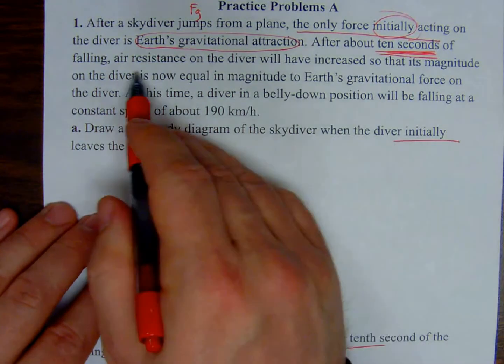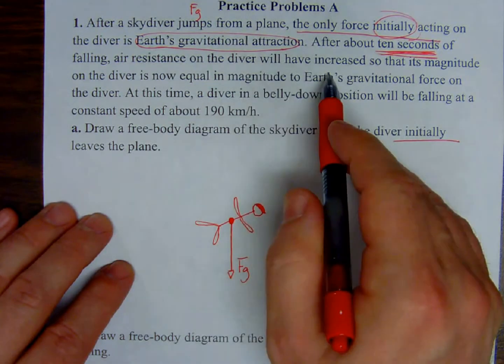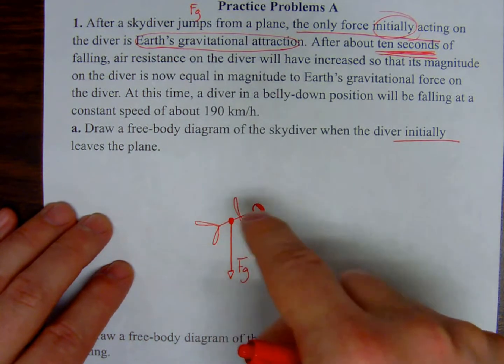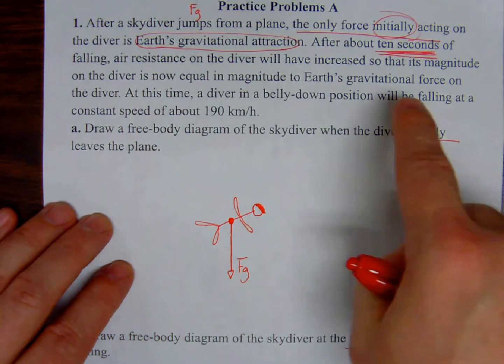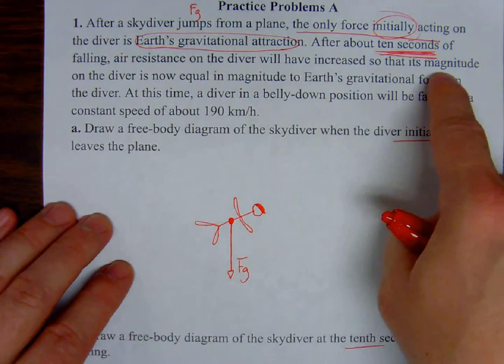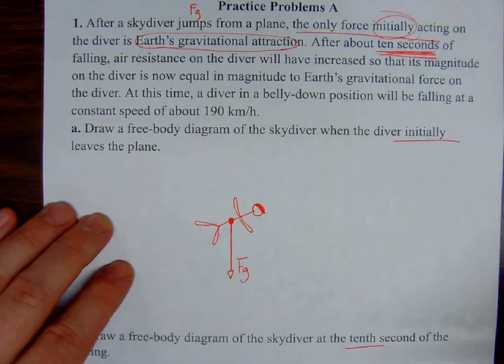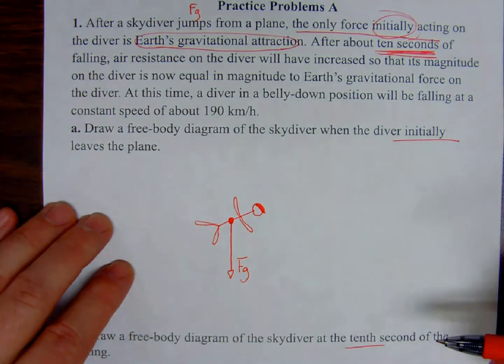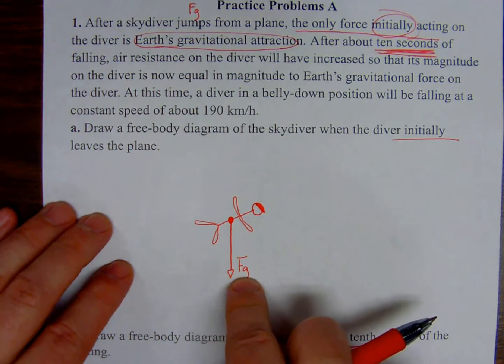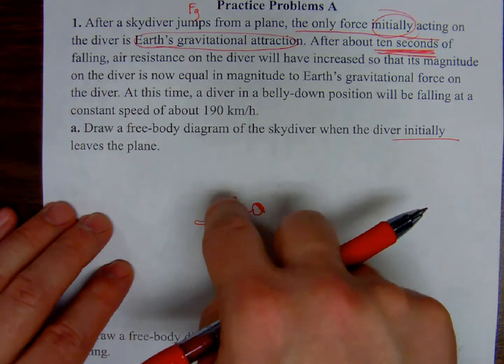So air resistance will have increased so that its magnitude on the diver is now equal to the magnitude of Earth's gravitational force. That means however big this F sub G is, the force due to air resistance is going to be just as big. Right? Equal in magnitude. Doesn't mean equal in direction. Okay? That's not true. But it's equal in magnitude only.